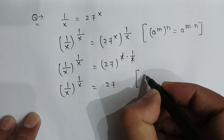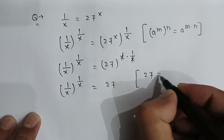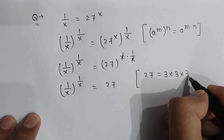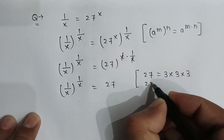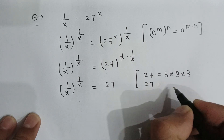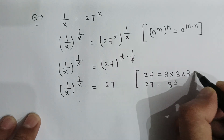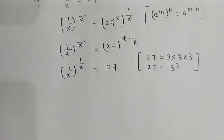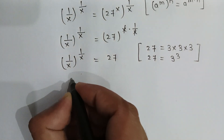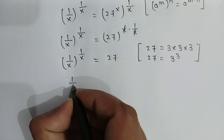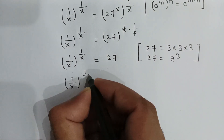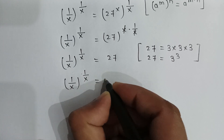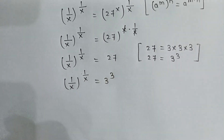27 can be written as 3 multiplied by 3 multiplied by 3, that is, 27 is equal to 3 to the power 3. So, 1 divided by x to the power 1 over x is equal to 3 to the power 3.